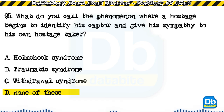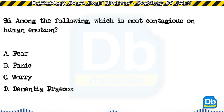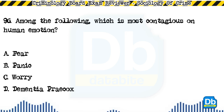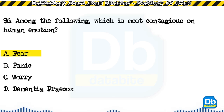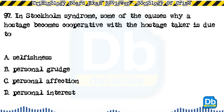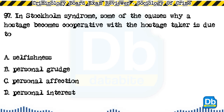Question 96: Among the following, which is most contagious on human emotion? a) fear, b) panic, c) worry, d) dementia precox. The answer is A, fear. Question 97: In Stockholm syndrome, one of the causes why a hostage becomes cooperative with the hostage taker is due to: a) selfishness, b) personal grudge, c) personal affection, d) personal interest. The answer is C, personal affection.